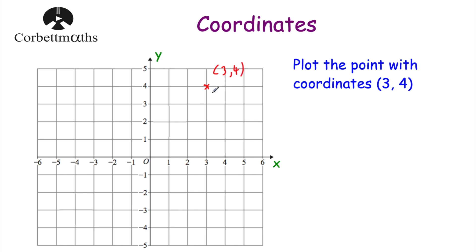Next, we've been asked to plot the point with coordinates (-4, 0). The x-coordinate is negative 4, so we go across to negative 4. And the y-coordinate is 0, so we're not going to go up or down — it's just that point there on the x-axis. That's the point (-4, 0): negative 4 along the x-axis and 0 up or down.